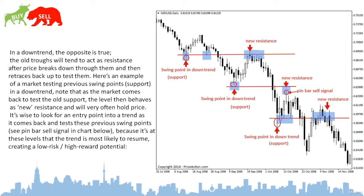In a downtrend, old support levels will tend to act as resistance after price breaks down through them and then retraces back up to test them. Here is an example of a market testing previous swing point support in a downtrend — note that as the market comes back to test the old support, the level then behaves as new resistance. It's wise to look for an entry point into a trend as it comes back to test this previous swing point, because it's at these levels that the trend is most likely to resume, creating a low-risk high-reward potential.